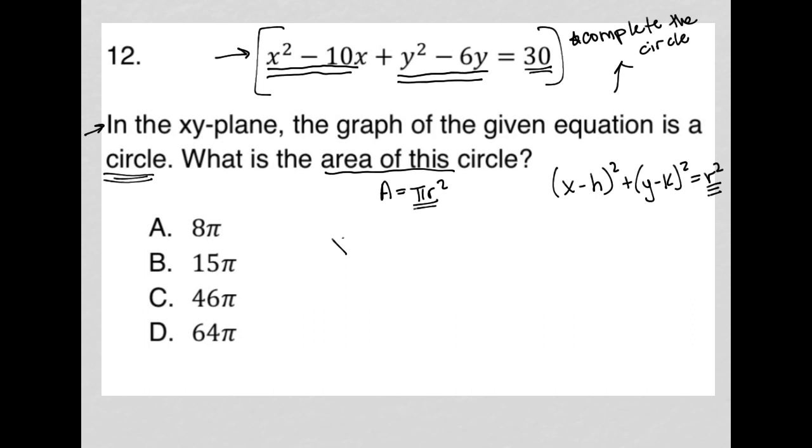So let's get started. I have this equation, x squared minus 10x. I am going to leave some space here, and then I have plus y squared minus 6y. I'm going to also leave some space there, equals 30, and we're going to also have some things going here.